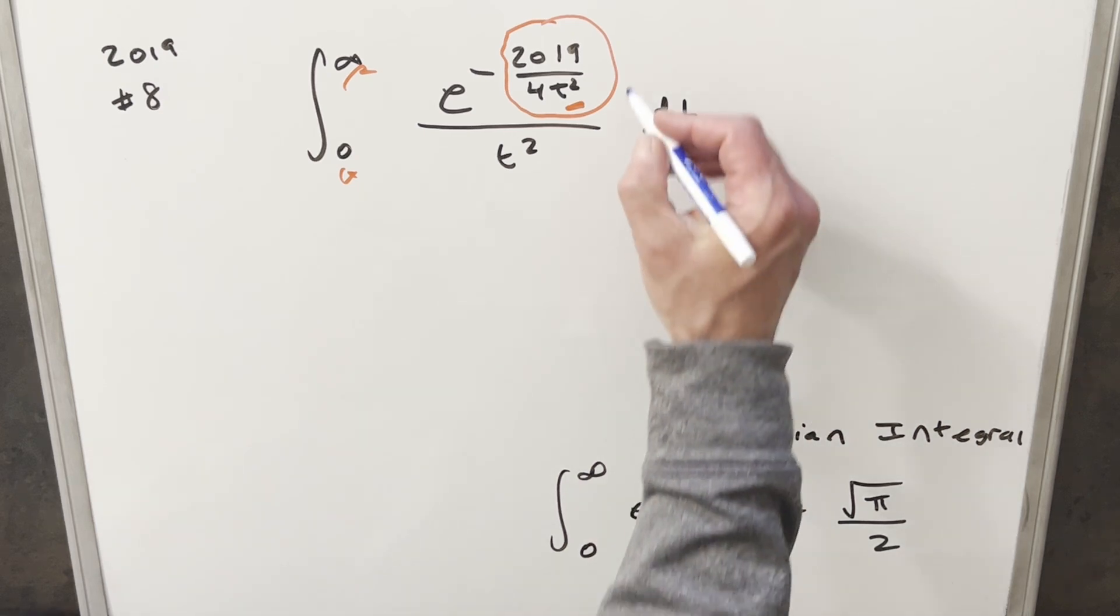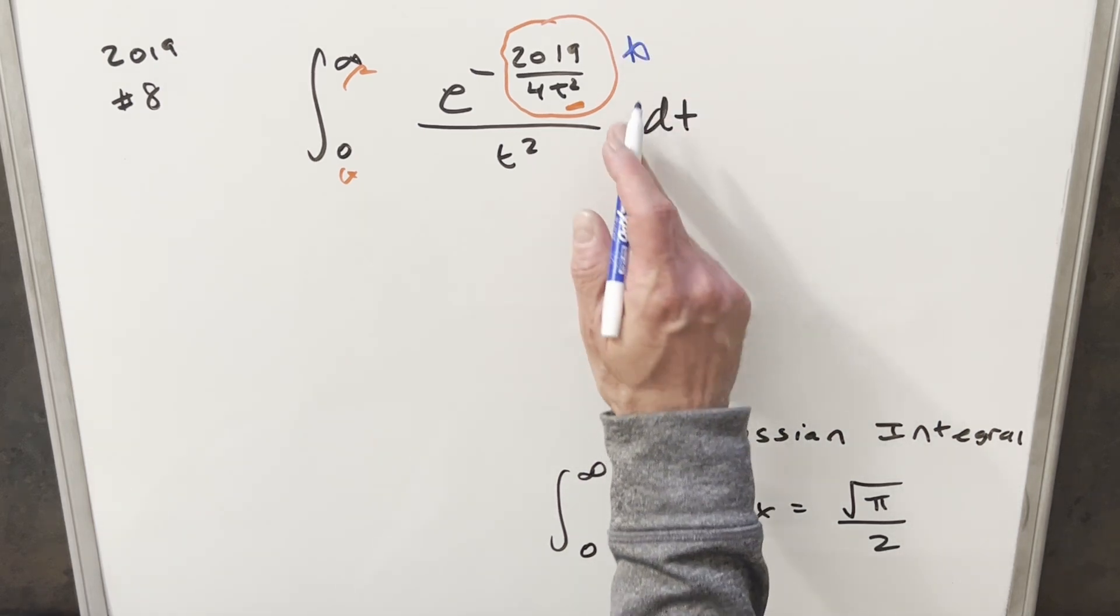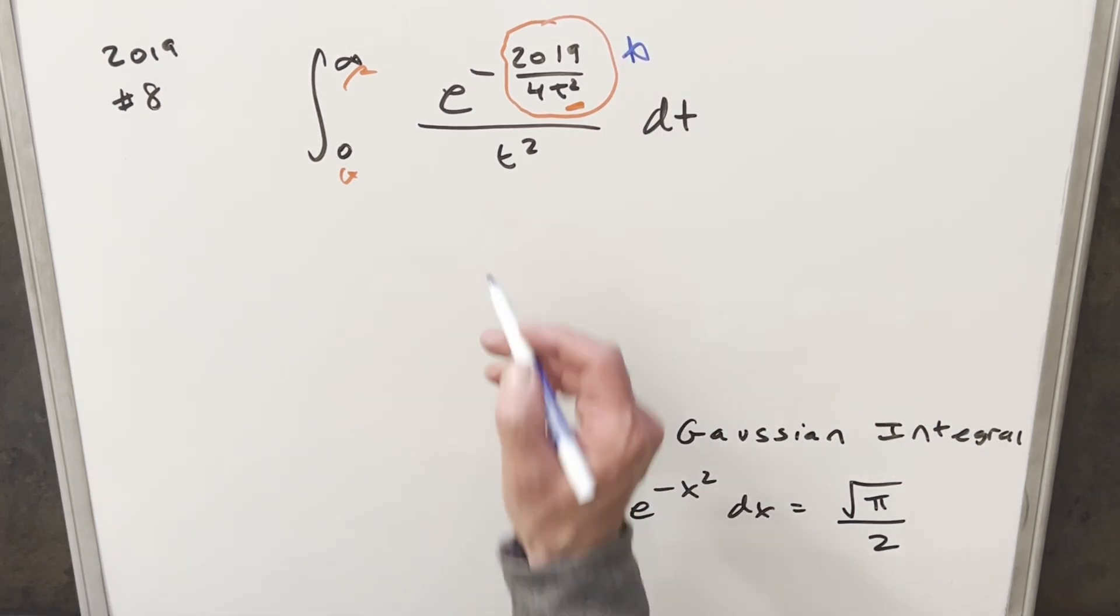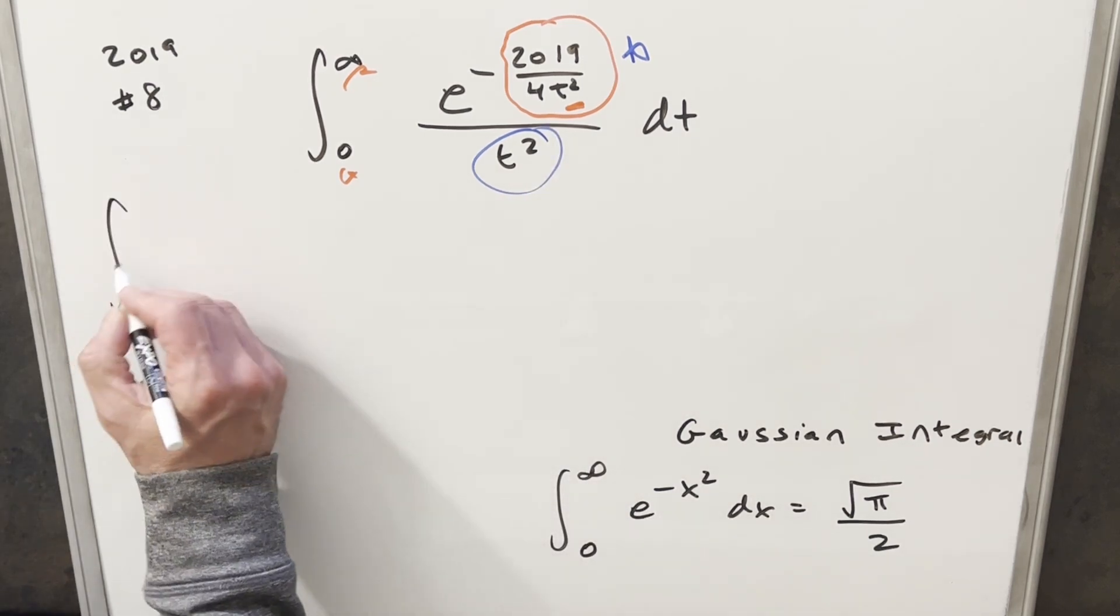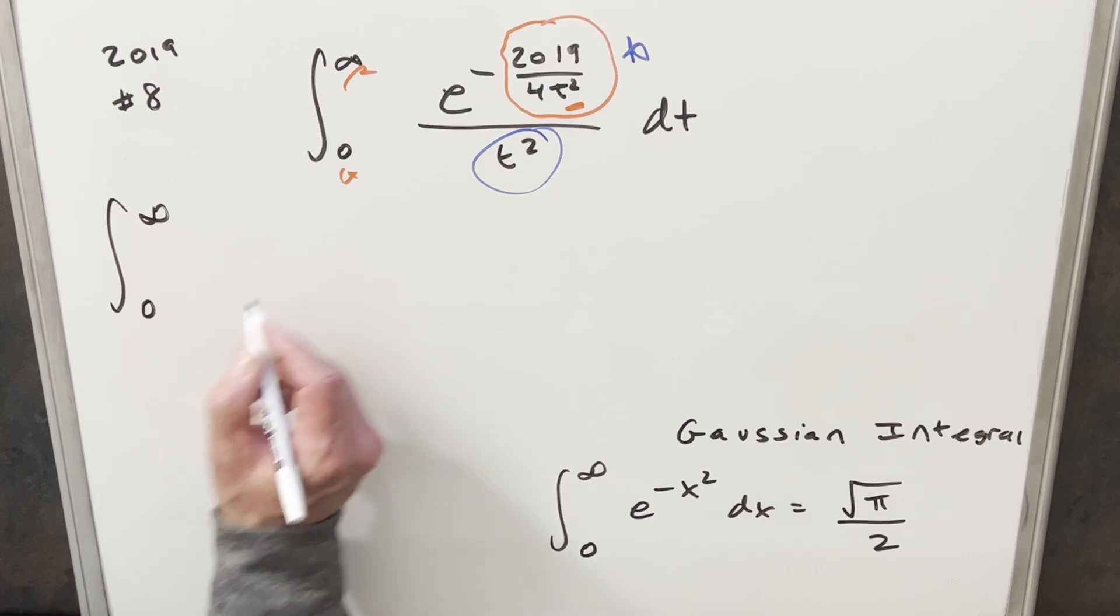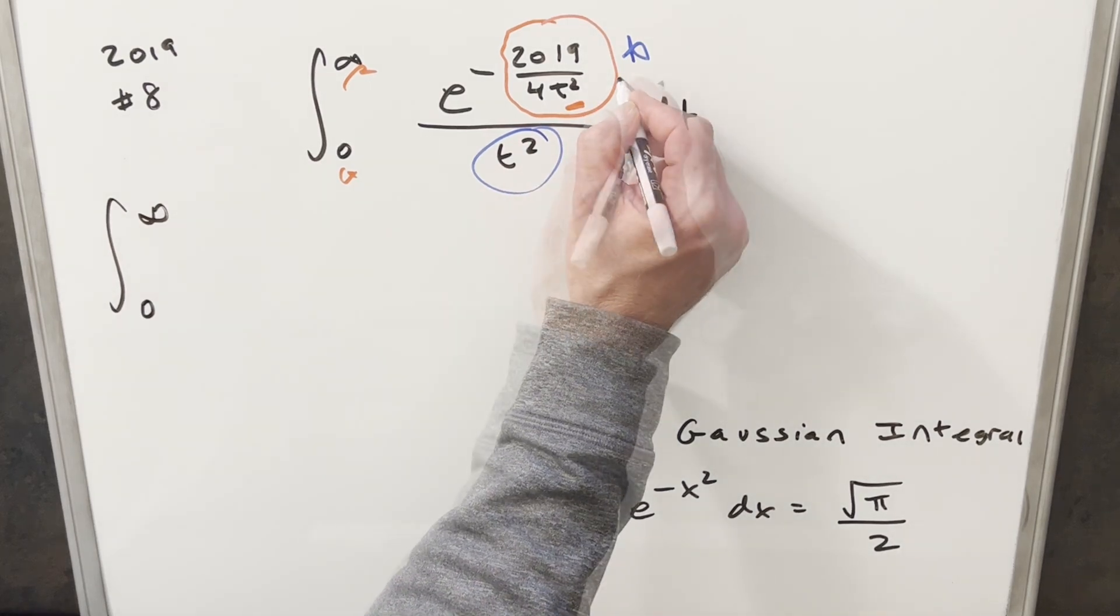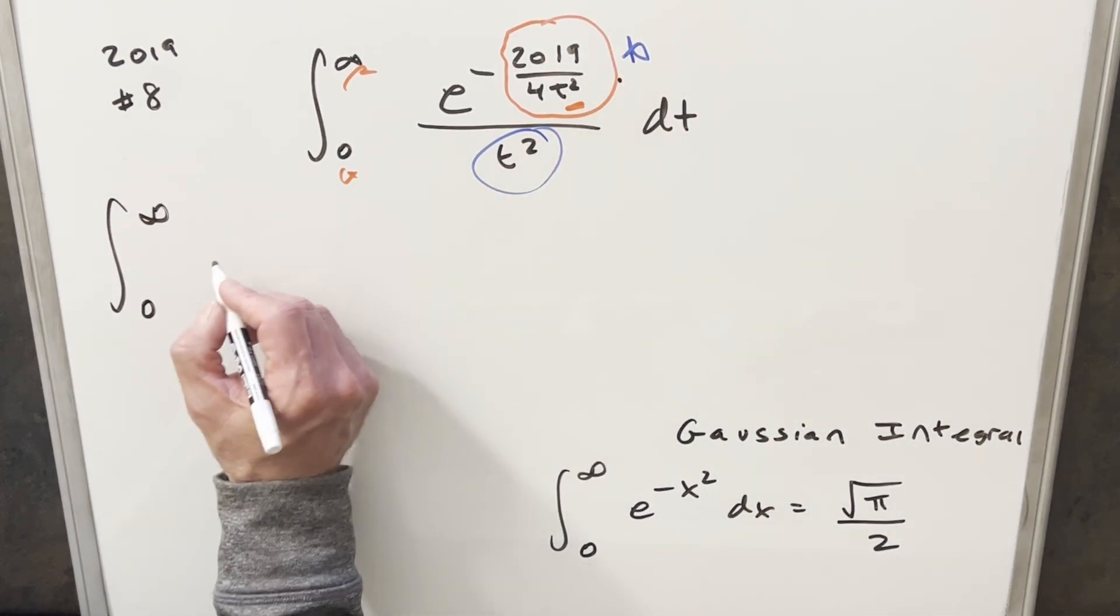So for our integral, what I want to do is take this. We're going to need to do some algebra and some manipulation in order to change that to look more like this. And also, we need to deal with this t squared here in the denominator. So what I want to do first is come over here and rewrite this. I want to rewrite this as something squared.